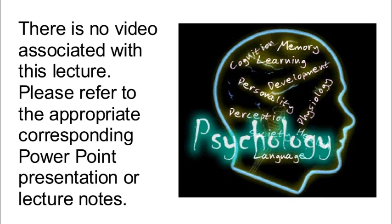If you take a look at the next slide, this is an overview of some of the things I'd like to talk about with respect to social psychology. I've already mentioned forming impressions of other people. In addition, social psychology involves making attributions for why people do the things that they do. One of the things that we as humans like to do is explain why a person engages in a particular behavior. This is called an attribution. Sometimes our attributions are correct, and sometimes they are incorrect or are based on incorrect or incomplete information.